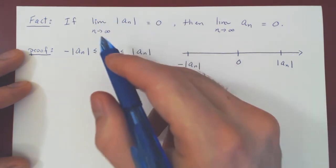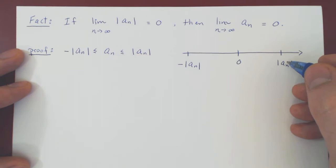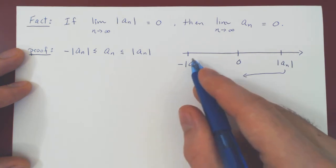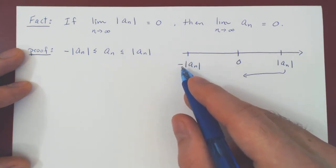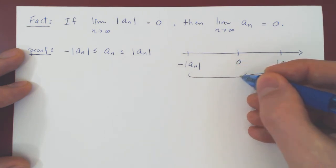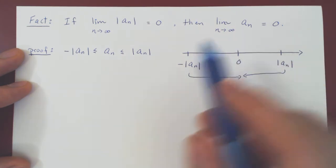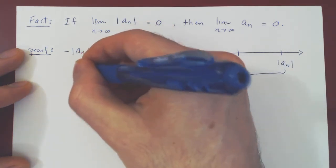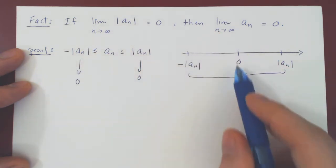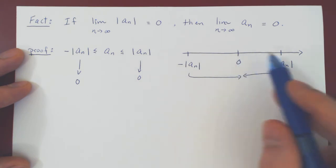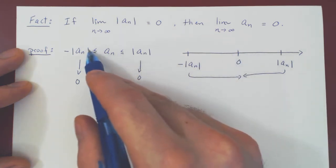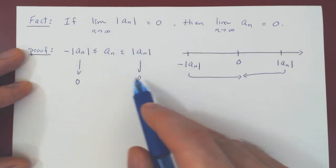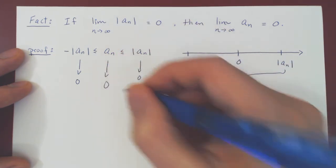But we know by assumption that in absolute value a_n shrinks to 0. So this term will be approaching 0. If a_n in absolute value shrinks to 0, so does negative a_n. This will also approach 0, but as a_n is always between negative a_n and a_n and both sequences are approaching 0 in the limit. So this point approaches 0, this point approaches 0, a_n is always in between. It has nowhere to go and by the squeeze theorem in the limit it gets squeezed onto 0. So a_n must also converge to 0.